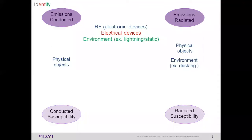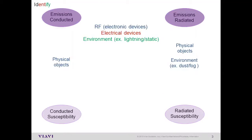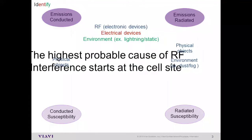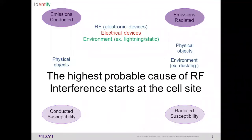Both good and unwanted signals have physical objects that can also contribute to interference because they impede the signals. For example, one solution to poor RF reception is to walk outside or go to a window, reducing the number and types of physical objects. In either case, conducted or radiated, they both have these same elements to deal with. Given the industry buzz around numerous interference problems, we suspect you may not have to travel very far to find and fix it—unless the problem is at the top of the tower. The highest probable cause of RF interference generally starts right there at the cell site.